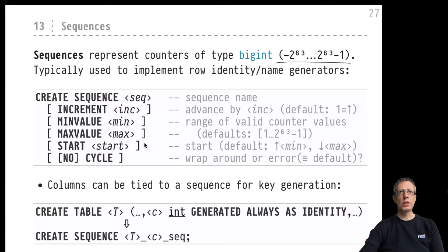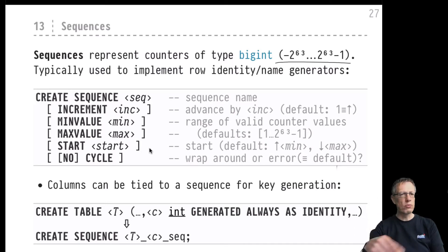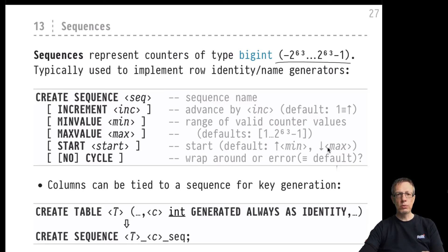You can define a start value for the counter, and you can define whether the counter should be a wrap-around counter that does not error out when it reaches its max value. If it's defined to be a cyclic sequence, after reaching the max value it wraps back to the minimum value — a true round-robin counter. If you don't provide a start value, for a positive increment counter we start at the minimum value, and for a negative increment we start at the maximum value.